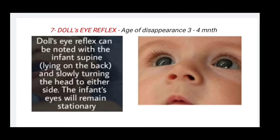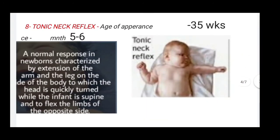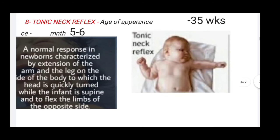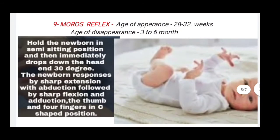Next is the tonic neck reflex. Its age of appearance is 35 weeks and age of disappearance is five to six months. The normal response in the tonic neck reflex is characterized by extension of the arm and leg on the same side of the body to which the head is quickly turned when the infant is supine, and flexion of the limbs on the opposite side. In this image you can see the tonic neck reflex example.